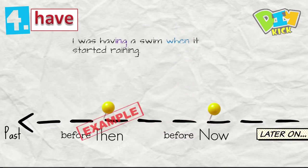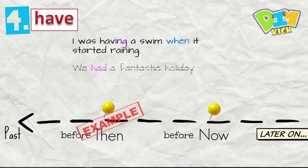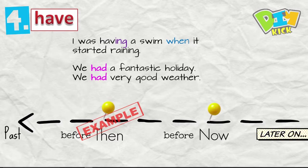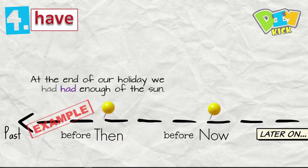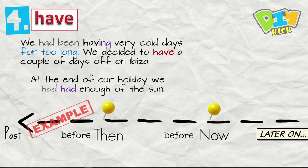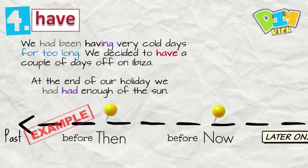The past. I was having a swim when it started raining. We had a fantastic holiday. We had very good weather. My cat didn't have a good time at home without me. At the end of our holiday we had had enough of the sun. We had been having very cold days for too long. We decided to have a couple of days off on Ibiza.